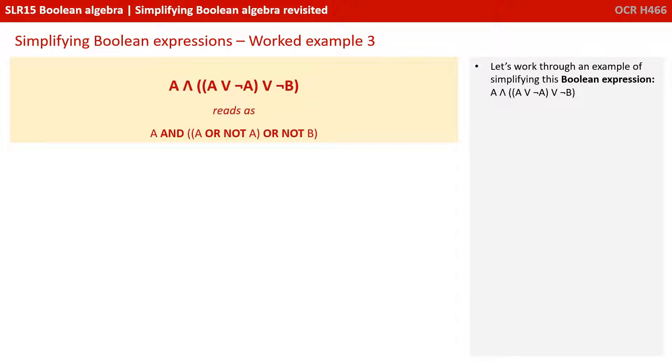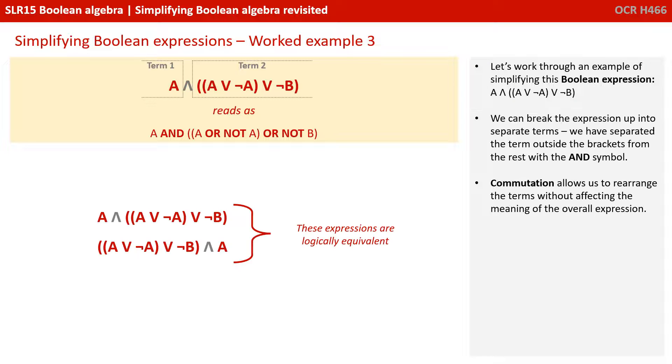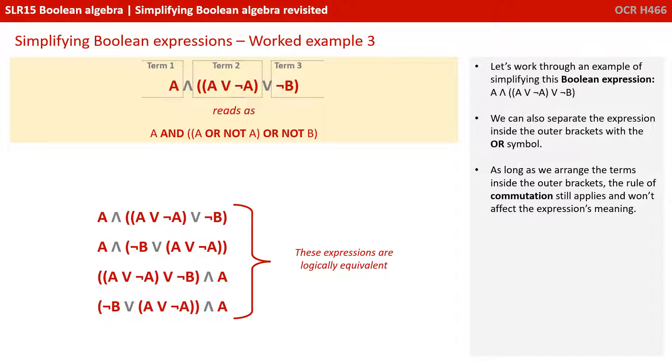Let's try another example now. Let's try simplifying A AND A OR NOT A OR NOT B. Again, we break the expression up into separate terms. We've separated the term outside the brackets from the rest with the AND symbol. Commutation allows us to rearrange the terms without affecting the meaning of the overall expression as always. We can also separate the expression inside the outer brackets with the OR symbol. As long as we rearrange the term inside the outer brackets, the rule of commutation still applies and won't affect the expression's overall meaning.